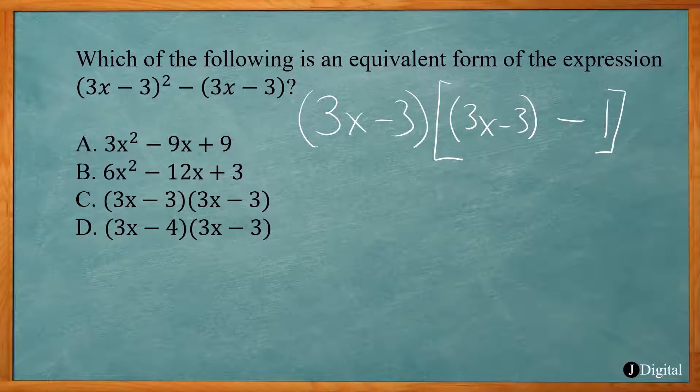And so this is (3x - 3) times (3x - 3), or (3x - 3)², and then (3x - 3) times -1 gives you the -(3x - 3). Okay, so that's factored. Now inside here, I can get rid of the parentheses. Give me 3x - 3 - 1. And let's bring this down.